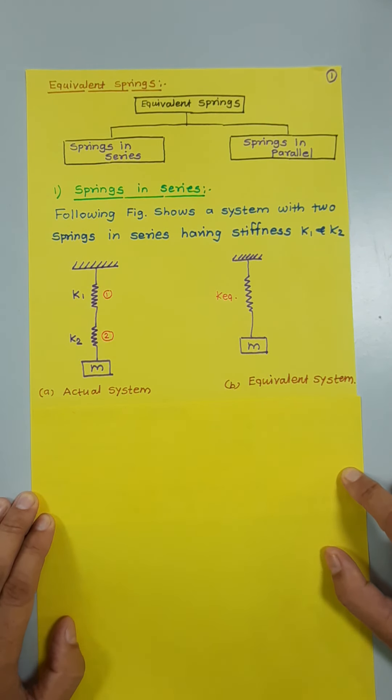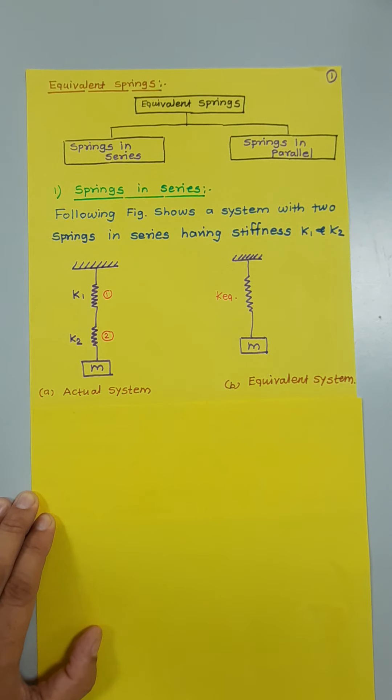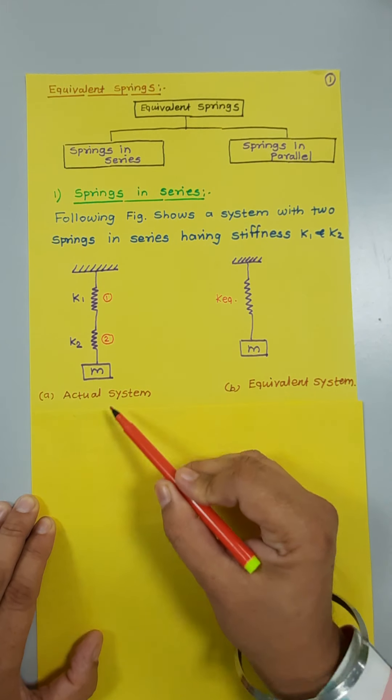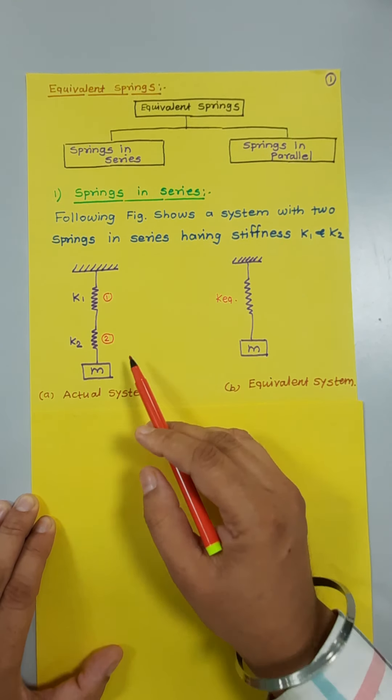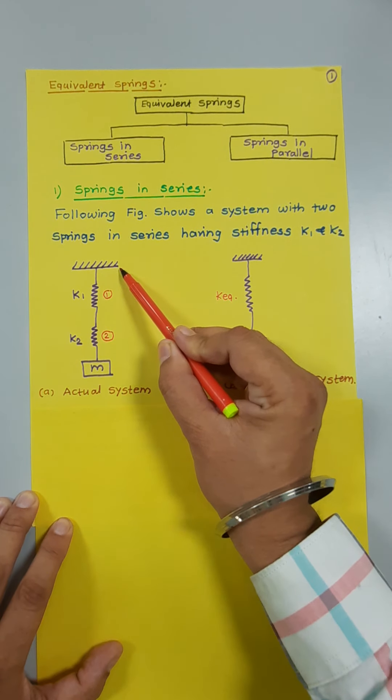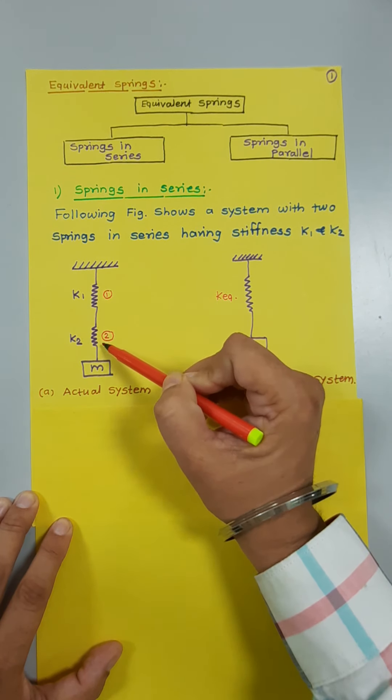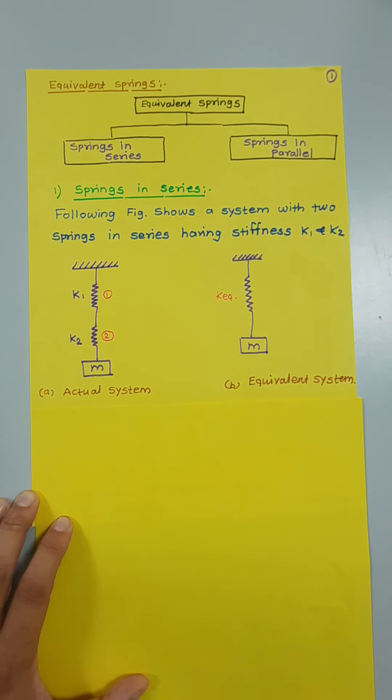Now we will learn springs in series. The following figure shows a system with two equivalent springs in series having stiffness k1 and k2. In the actual system, the first spring is attached to the fixed surface, then the second spring is attached to spring number one, and spring number two is further attached to the mass. This combination is called springs in series.